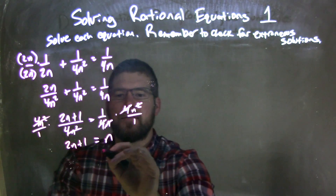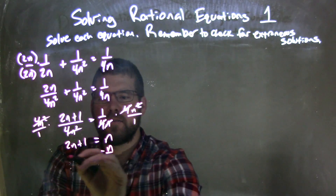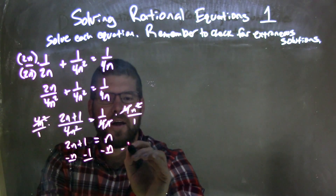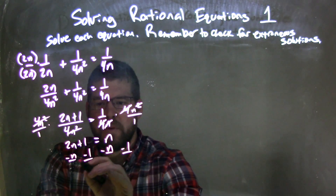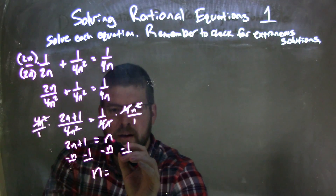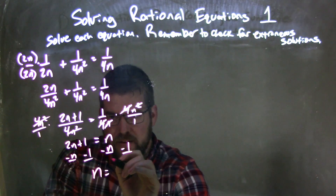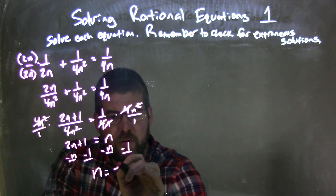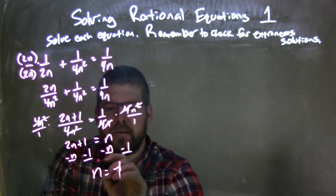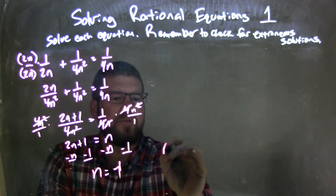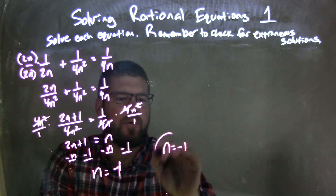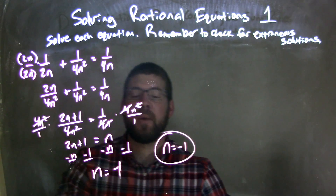So now I'm going to subtract n from both sides, subtract 1 from both sides, giving me n by itself on the left and negative 1 on the right. So I can rewrite this as n equals negative 1, and there's my answer.